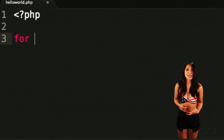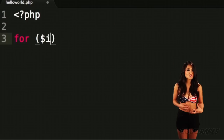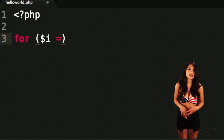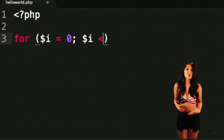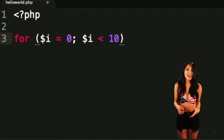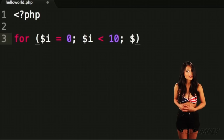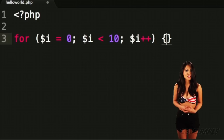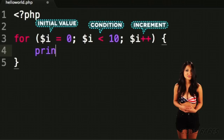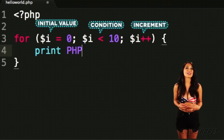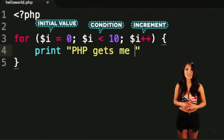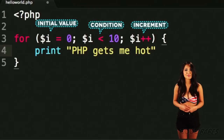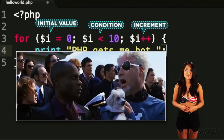Let's type the keyword for, some parentheses. Inside those put i equals zero, semicolon, i is less than 10, semicolon, and i plus plus. Then we'll add some braces, and put the statement: print php gets me hot. So hot right now.